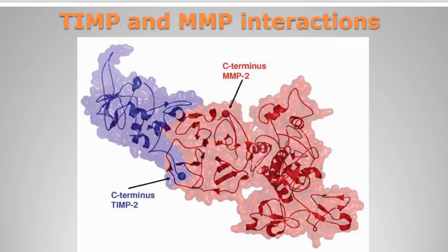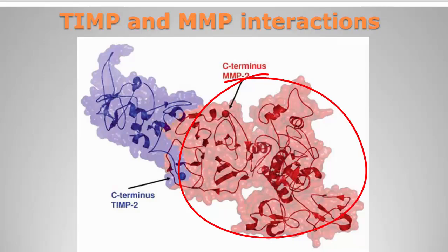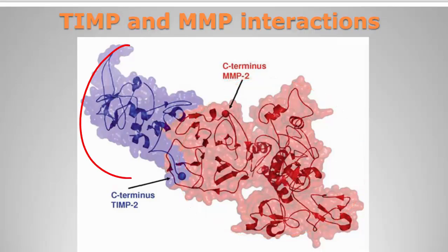The matrix metalloproteinase (shown in one color) and the tissue inhibitor of metalloproteinases, or TIMP (shown in blue), bind each other at the C-terminus — visible as the rounded ball-like ends — interacting with a non-covalent linkage. In this way, TIMPs can inhibit the overexpression of MMPs whenever needed. These are very essential.